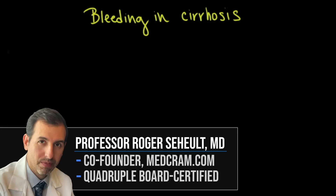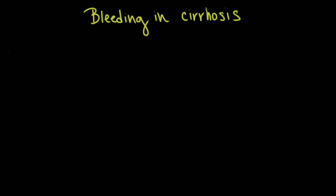Hello, everyone. Welcome to another MedCram video. We're going to talk today about bleeding in cirrhosis. Cirrhosis is an end-stage liver condition. It can be caused by a number of things — anything that causes inflammation in the liver, like hepatitis, alcohol, and even non-alcoholic steatohepatitis or fatty liver. I want to talk specifically about how we might manage bleeding in cirrhosis in a particular situation I was recently introduced to by taking care of a patient in the intensive care unit.